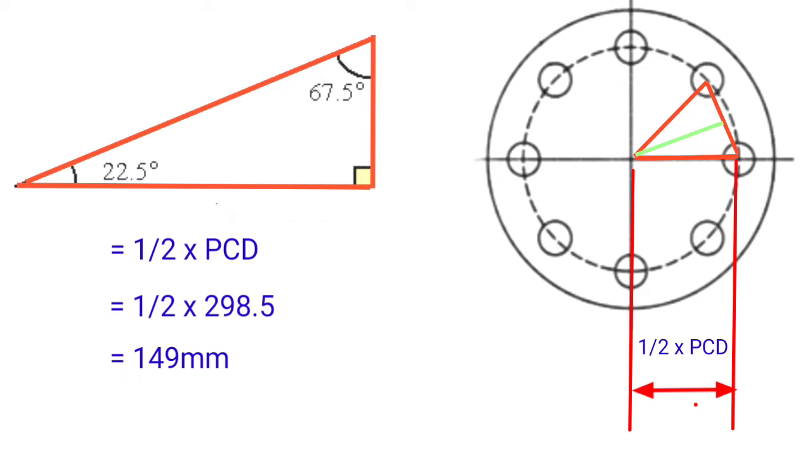We know PCD standard value 298.5 mm. So our triangle hypotenuse value equals half PCD, half into 298.5 equals 149 mm. That is the value for our triangle hypotenuse value.